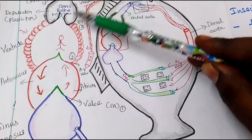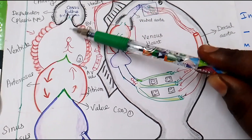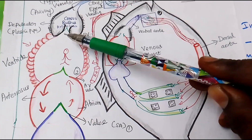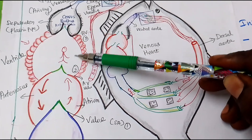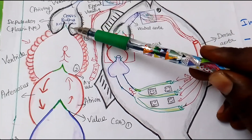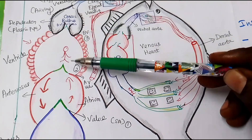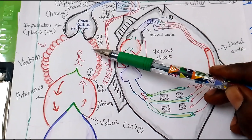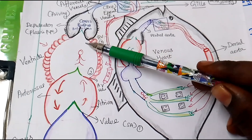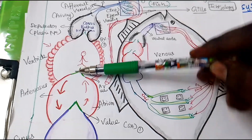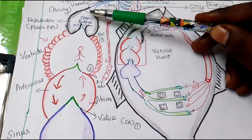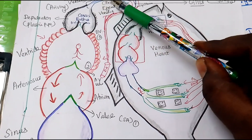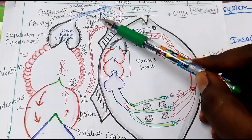You might ask why the conus arteriosus is present — the atrium cannot flush blood directly to the gills. The conus arteriosus acts as a depulsator: once the pressure in the ventricle increases, this valve opens. When the pressure rises very high, blood is collected and then goes to the ventral aorta.